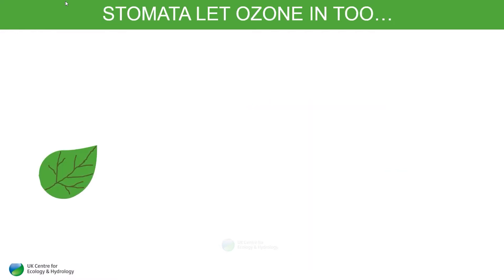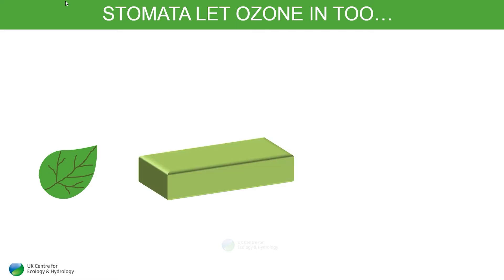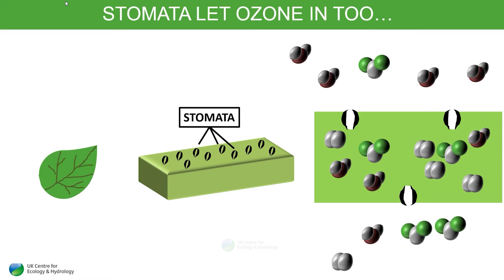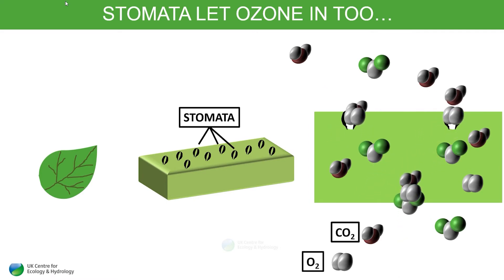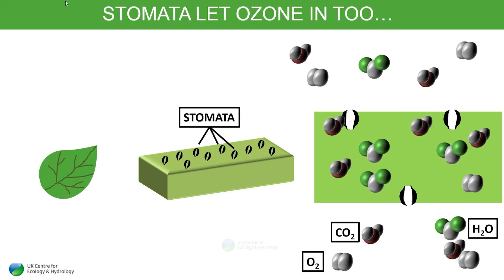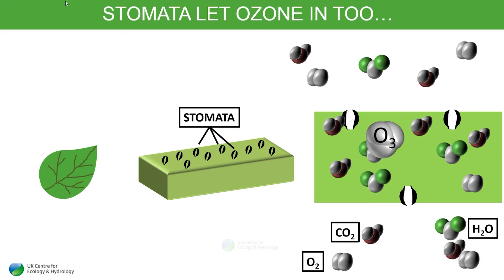So how does ozone cause crop damage? Gases get taken in at the leaf through open pores. Scientists call these pores stomata. In crop plants, stomata are open during the day to allow gas exchange for photosynthesis.